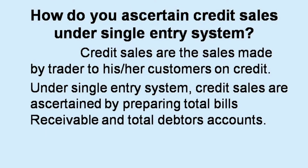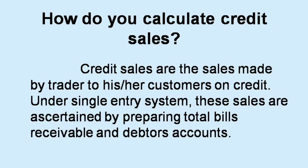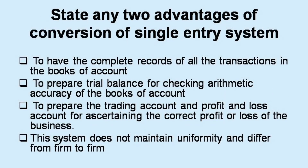How do you ascertain credit sales under single entry system? Credit sales are the sales made by a trader to his or her customers on credit. Under single entry system, credit sales are ascertained by preparing total bills receivable and total debtors accounts. The advantages of conversion of single entry system include having complete records of all transactions and preparing a trial balance for checking arithmetic accuracy of the books of accounts.